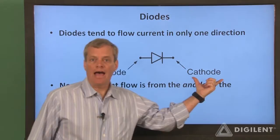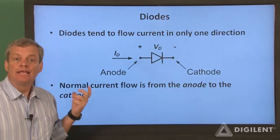A diode has two terminals. They're called an anode and a cathode. The direction of current flow is from the anode to the cathode.